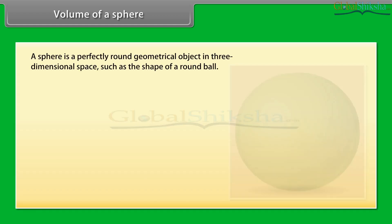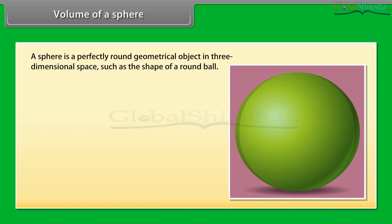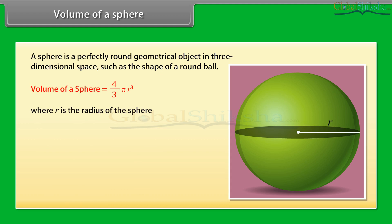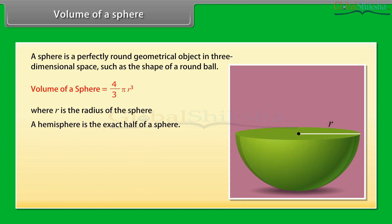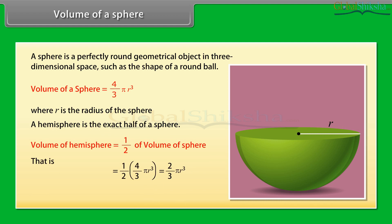Volume of a sphere. A sphere is a perfectly round geometrical object in three-dimensional space, such as the shape of a round ball. The volume of a sphere is given by 4 upon 3 pi r cube, where r is the radius of the sphere. A hemisphere is the exact half of a sphere, and its volume is 1/2 into 4/3 into pi r cube, which equals 2 upon 3 pi r cube, where r is the radius.